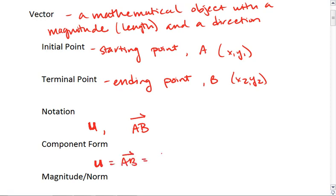will be, and we use these triangular parentheses. We say that it is x2 minus x1, y2 minus y1. And we will look at an example that's going to make this clearer, if it's not already.